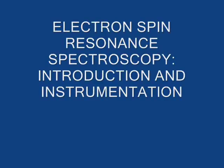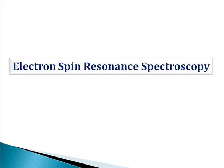Today we will discuss electron spin resonance spectroscopy — the introduction and instrumentation of ESR spectroscopy, an important topic of inorganic chemistry. Spectroscopy means the interaction of electromagnetic radiations with matter. When different types of electromagnetic radiations interact with matter, they give different types of spectroscopy. For example, absorption in the radio frequency region gives NMR spectroscopy, while absorption in the microwave frequency region gives ESR spectroscopy.